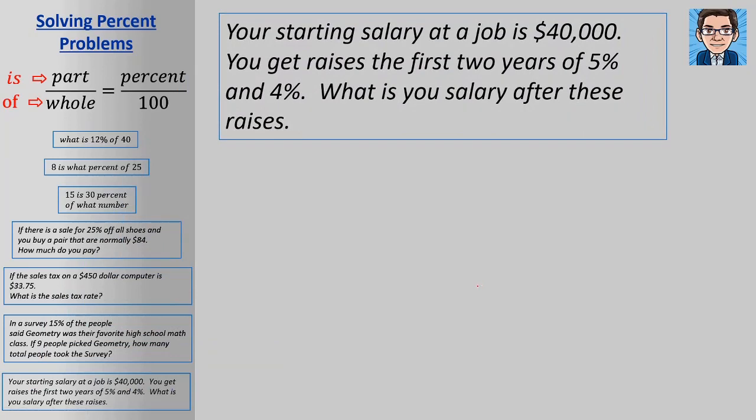All right. Your starting salary at a job is $40,000. You get raises the first two years of 5% and 4%. What is your salary after these raises? Now, the one thing we cannot do is add these two now. So we can't say that's going to be a total of 9% and take 9% of 40,000 and figure it that way. We've got to do this in two steps. So we're going to start with our $40,000 and our first year we got 5%. So we're going to multiply that times 5% and that's going to get us $2,000 is the raise for our first year.